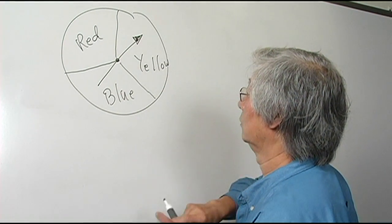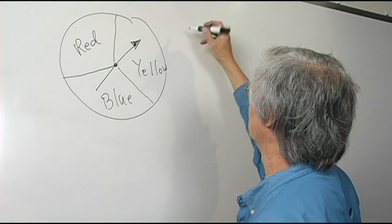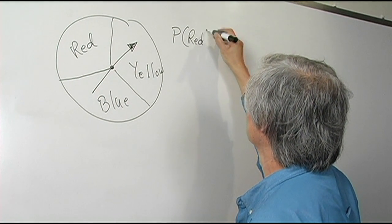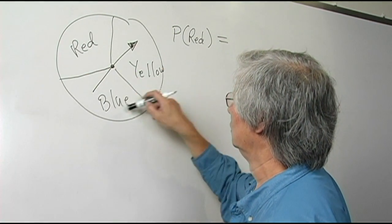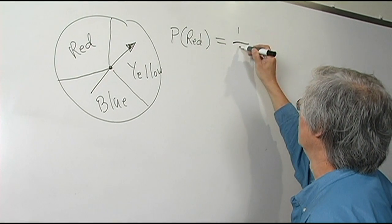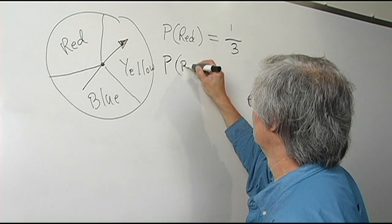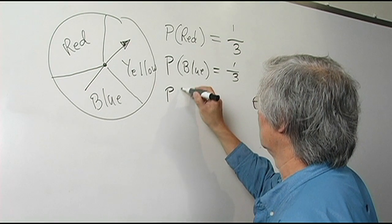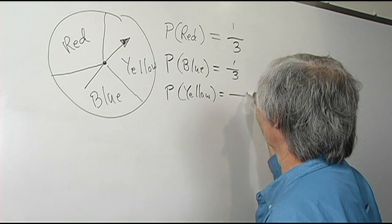So when you spin this, what's the probability of the arrow finishing up on red? You write this as: probability of red. The area of the red segment is about 1 third the total area of the circle, so it's 1 third. Similarly, the probability of blue is 1 third and the probability of yellow is 1 third.